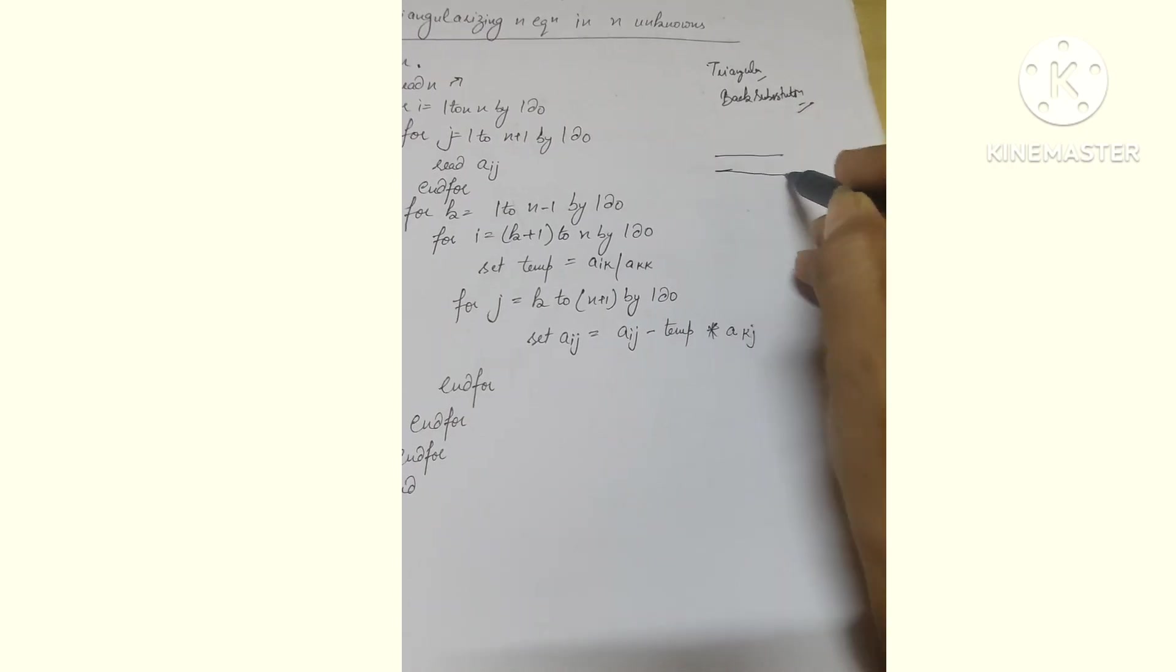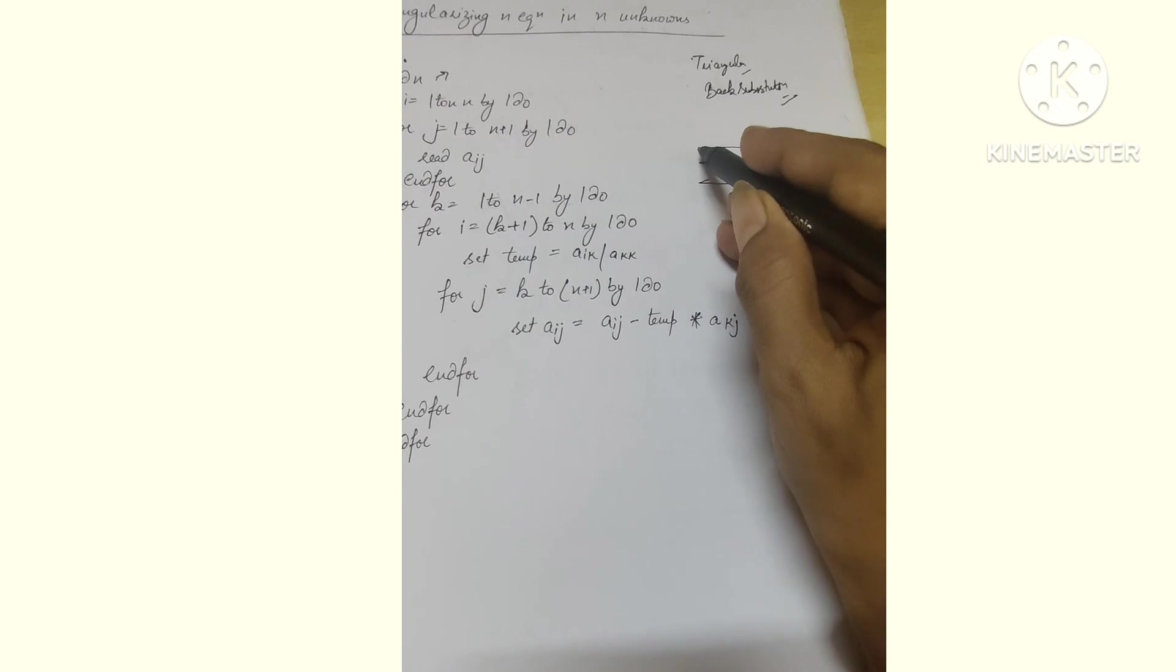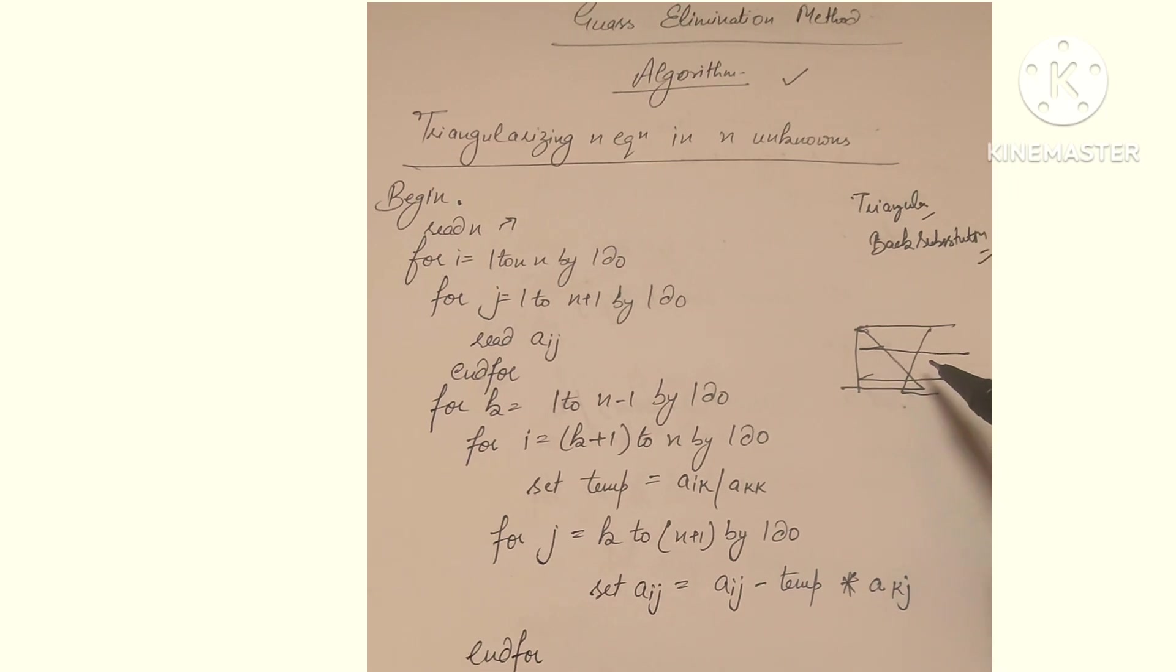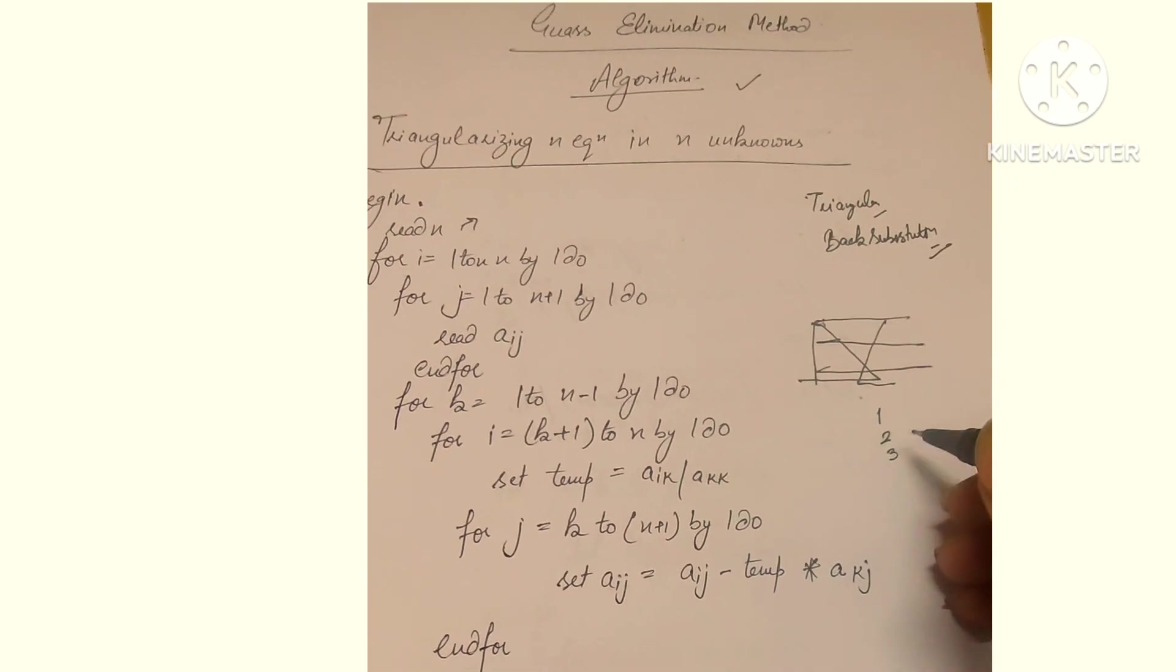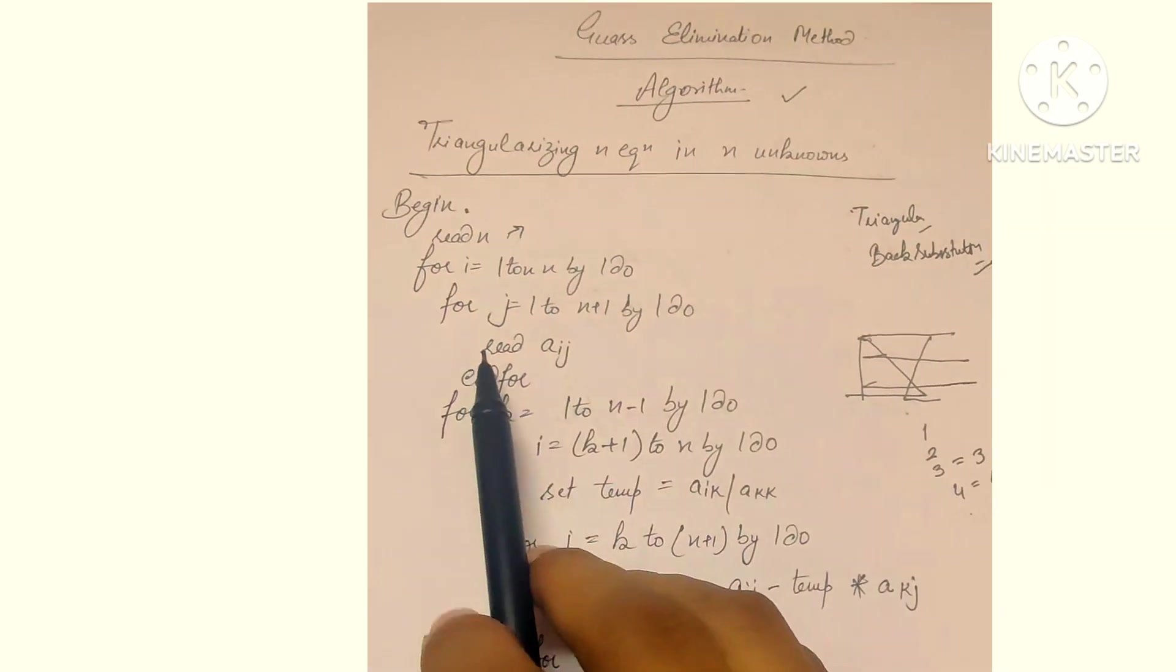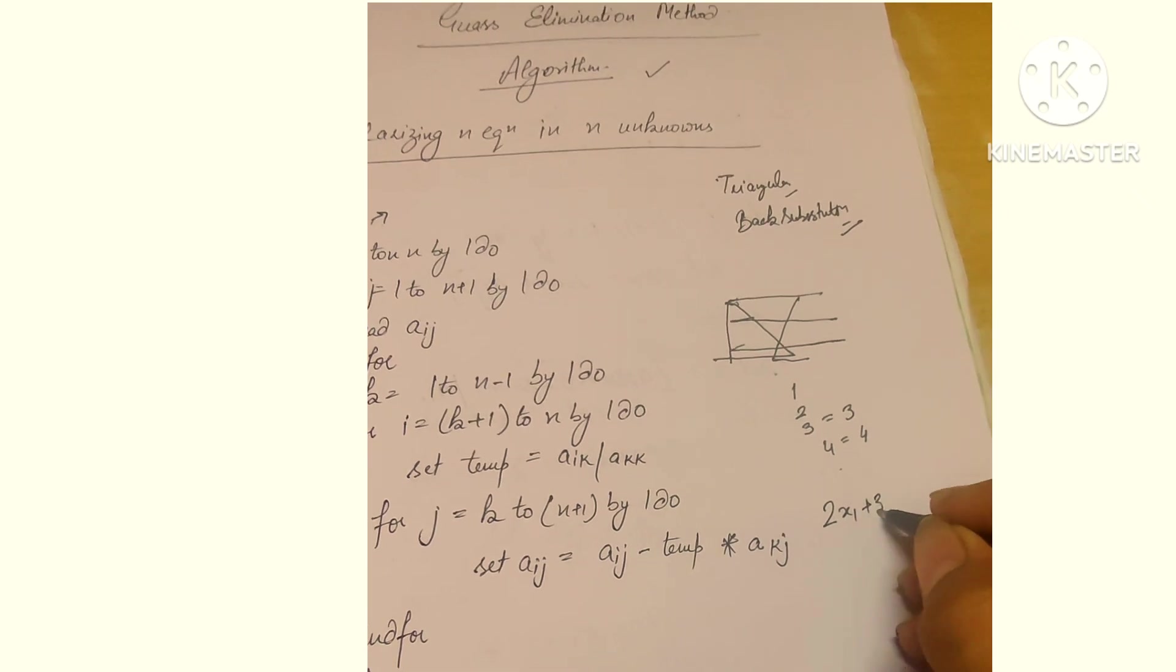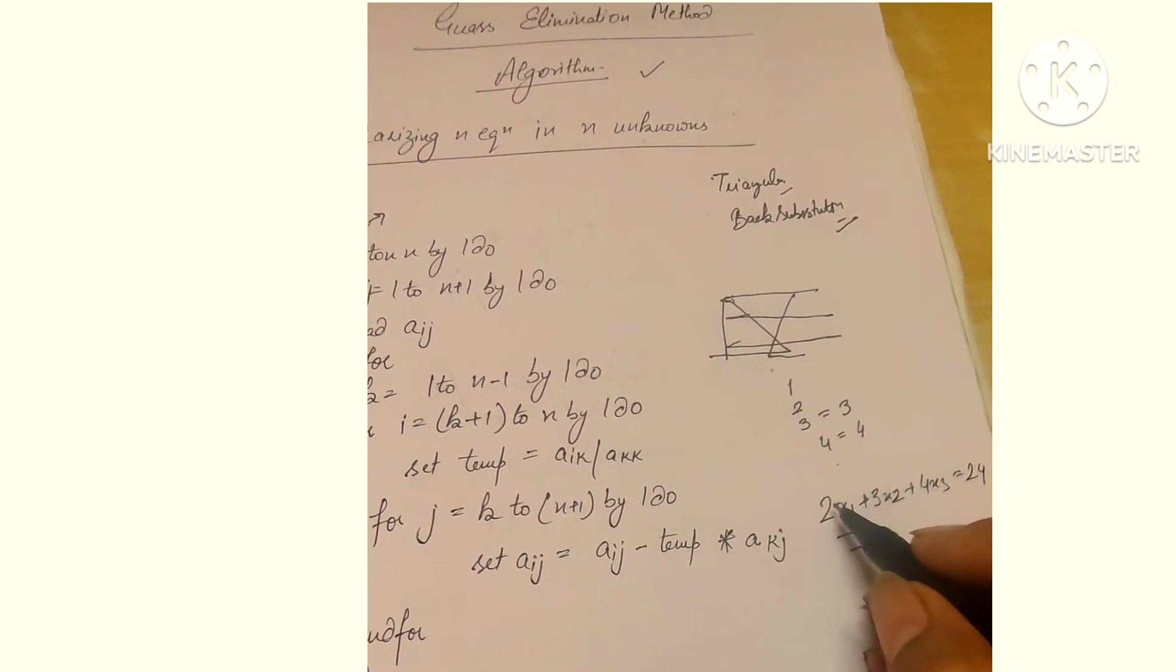In triangularization, if we have three equations in a matrix - watch the numerical part carefully - we need to eliminate elements one by one. In elimination, we reach triangularization and we get a set of values. You can make a triangle like this. As per the triangle, when we enter the algorithm, the first loop runs according to our equations. If there are three equations, automatically n equals three; if four, n equals four.